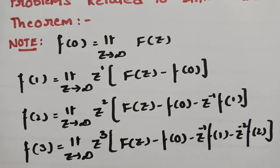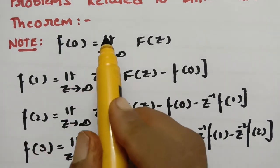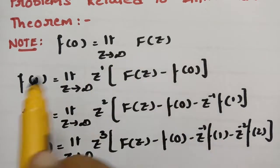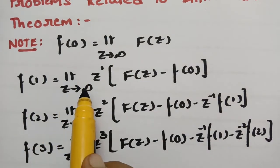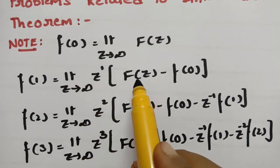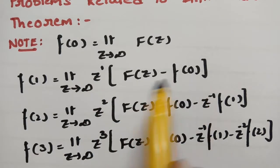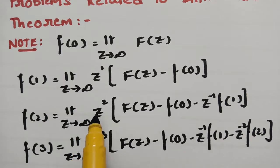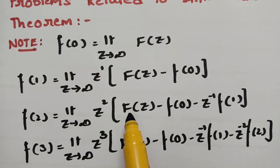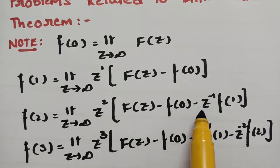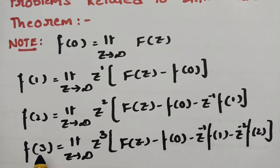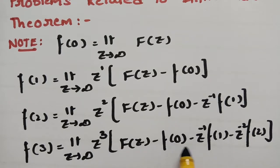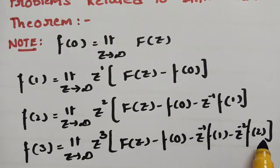Here are the formulae to be noted. For f(0): limit z→∞ of F(z). For f(1): limit z→∞ of z¹·F(z) − f(0). For f(2): limit z→∞ of z²·F(z) − f(0) − z⁻¹·f(1). For f(3): limit z→∞ of z³·F(z) − f(0) − z⁻¹·f(1) − z⁻²·f(2).